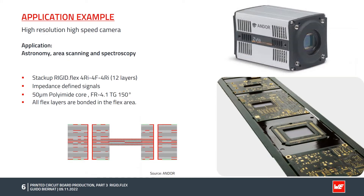The third example shows a high-resolution, high-speed camera application in the astronomy, area scanning, and spectroscopy fields. Here the stack-up is 4RI 4F 4RI — a 12-layer board with 4 layers in the flex area and 12 layers in the rigid area. It features impedance-defined signals, a 50-micron polyimide core, FR4 standard Tg 150 degrees, and all flex layers are bonded in the flex area.